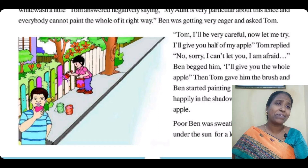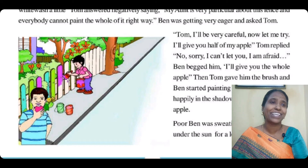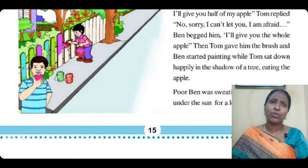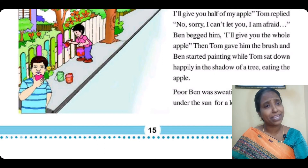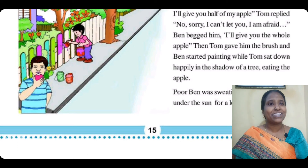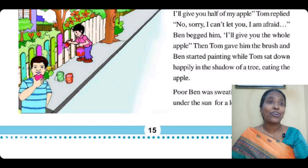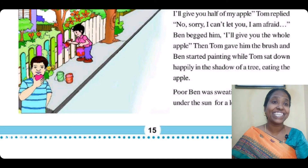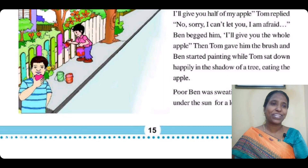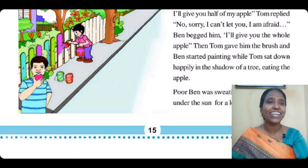Ben begged and pleaded — 'Please, just one chance. I will give you the whole apple.' So not half but the full apple. Tom gave him the brush, and Ben started painting while Tom sat down happily in the shadow of a tree eating the apple. This was the trick of Tom — he managed to make Ben Rogers work for him, and Ben was painting while Tom nicely enjoyed the apple.